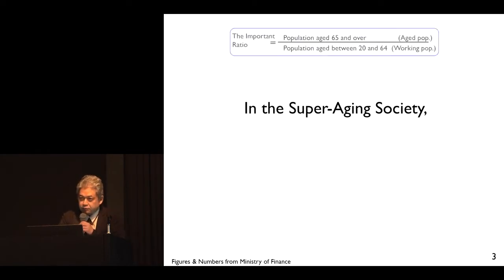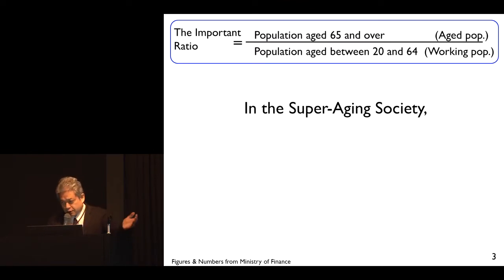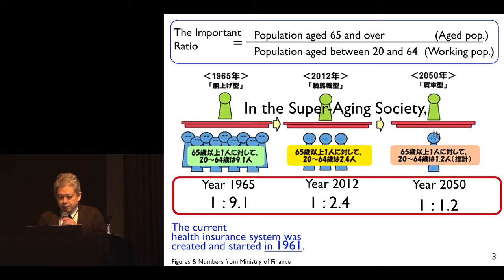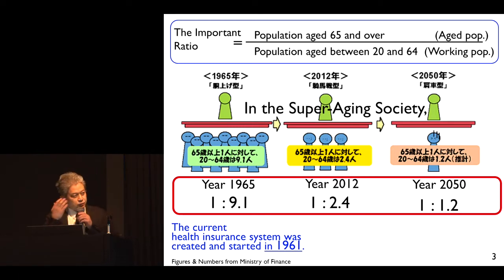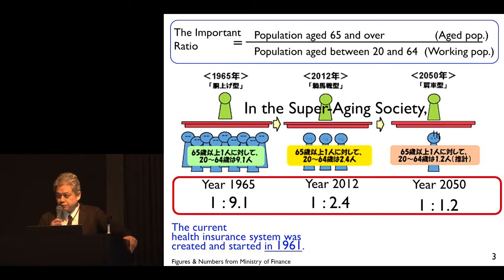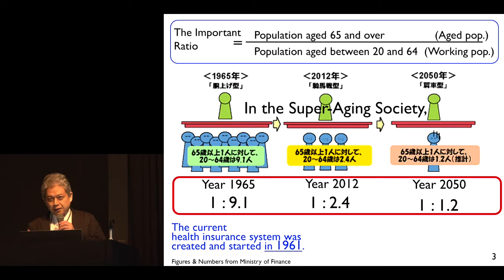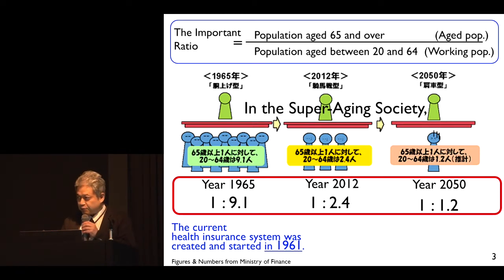In our super-aging society, this is a kind of dependency ratio. The ratio of aged population to the working population is very important. When our health insurance system was created and started, this ratio was one versus nine — nine people supported one elderly person. But now that ratio is 1.2, and it is approaching 1.1. For financial sustainability of our health insurance system, including our universal health coverage, this is very important.